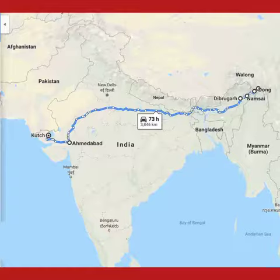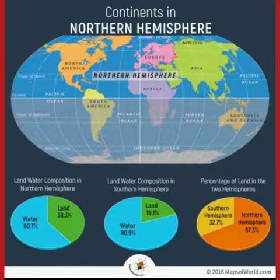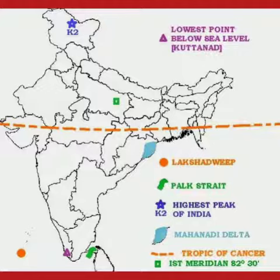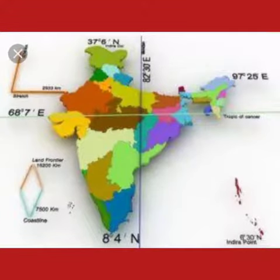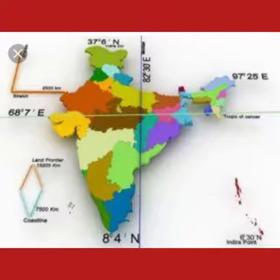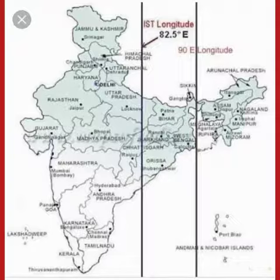India is the most populous country in the world after China. India is situated in the northern hemisphere. The Tropic of Cancer passes almost halfway through the country. From south to north, the mainland of India extends between 8°4' north and 37°6' north latitude. From west to east, India extends between 68°7' east and 97°24' east longitudes. The local time of longitude 82½° east has been taken as the Indian Standard Time.